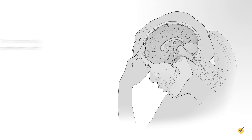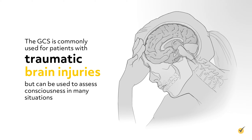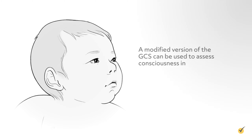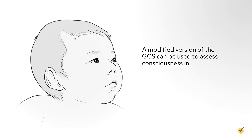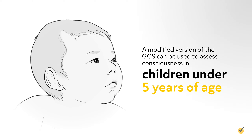The GCS is commonly used for patients with traumatic brain injuries, but can be used to assess consciousness in many situations. A modified version of the GCS can be used to assess consciousness in children under five years of age.